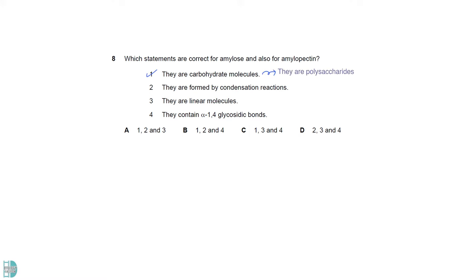Both amylose and amylopectin are carbohydrates. They are formed by the condensation of alpha-glucose molecules. Only amylose is a linear molecule. Amylopectin is branched. The monomers are joined together by alpha-1,4-glycosidic bonds, so it is true for them.